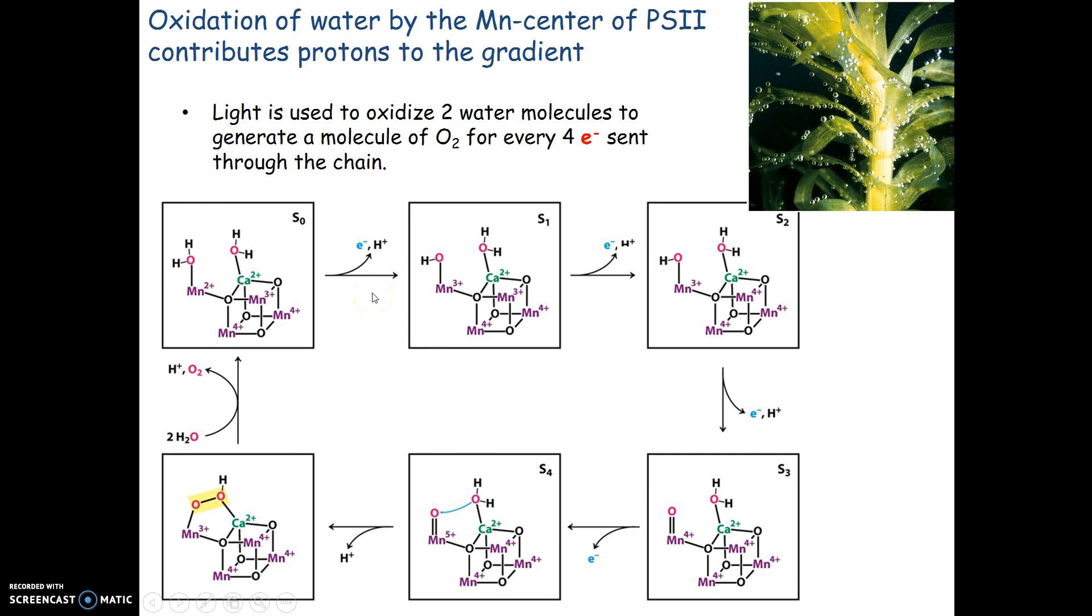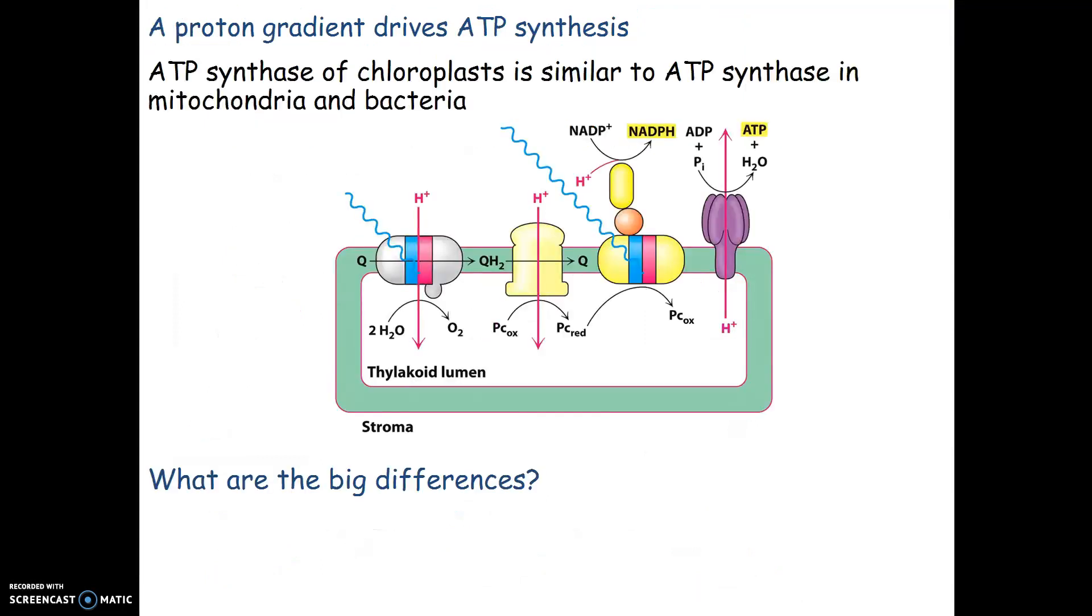How do we get water to split and get those four electrons? A manganese center with metals is associated with this, just like iron-sulfur clusters in cellular respiration. Here we're dealing with manganese and calcium. Electrons are transferred from one water molecule to form double-bonded oxygen, then electrons from the other oxygen come over to create that bond. That's how two water molecules split into one O2.